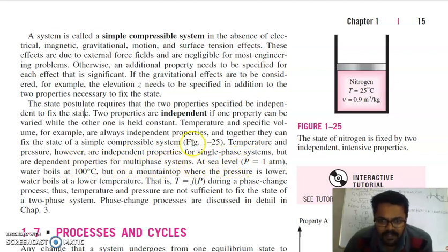Pressure and temperature can't define the property of a system. The reason is because at sea level, pressure is one atmosphere, then water boils at 100 degrees Celsius. But at a mountain where pressure is lower, water boils at lower temperature. So pressure and temperature can't be used, but we can use pressure and volume to define the state of a system.